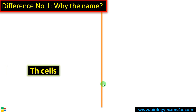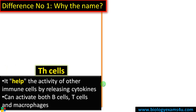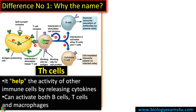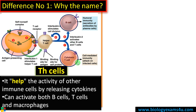Why is it called a T helper cell? The T helper cell is a key player that regulates the entire adaptive immune response, or specific defense mechanism. As you see in this figure, this T helper cell can interact with antigen presenting cells like macrophages and dendritic cells, and it can activate B cells and also cytotoxic T cells.